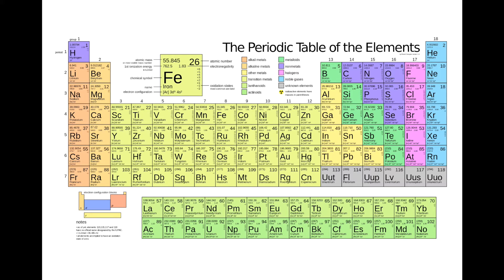This is what the Periodic Table actually looks like. It has a kind of odd shape — it's not quite a rectangle — and there's a reason for that. We'll get into what exactly all of these elements are in the next lesson. In today's lesson, we're going to talk about just how the Periodic Table is organized and how it works.